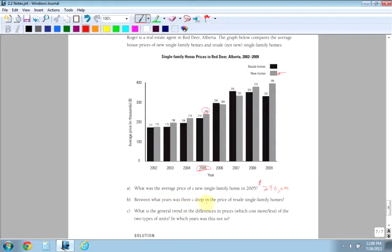Between what years was there a drop in the resale single family? So we're looking at the black, and we're trying to see when there was a drop. Well, it went up, up, up, way up, up quite a bit more. Oh look, it dropped down there and it dropped down again there for the black one. So I would say between 2007 and 2009. So between 2007 and 2009, there was a drop in resale home value.